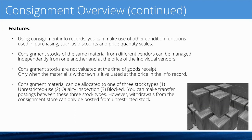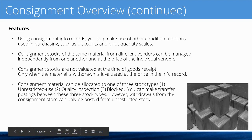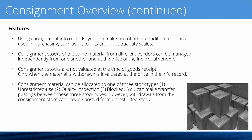Using consignment info records, you can make use of all the condition functions used in purchasing, such as discounts or price scales. Price scales allow different prices as you buy more — for example, one price at 100 units and a lower price at 1,000. Consignment stocks of the same material from different vendors can be managed independently at the price of each individual vendor. So in a multi-vendor arrangement, consignment inventory for vendor A is separate from vendor B even for the same material number. Consignment stocks are not evaluated at goods receipt — only when the material is withdrawn is it valuated at the price in the info record.